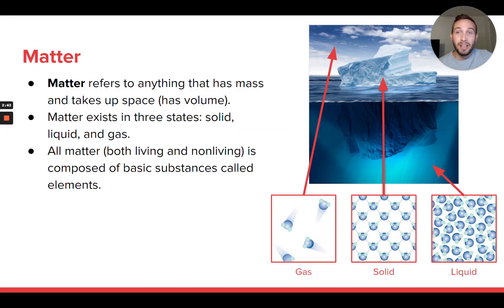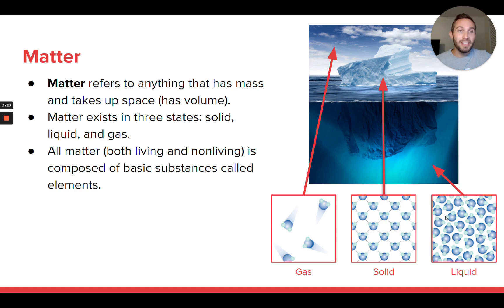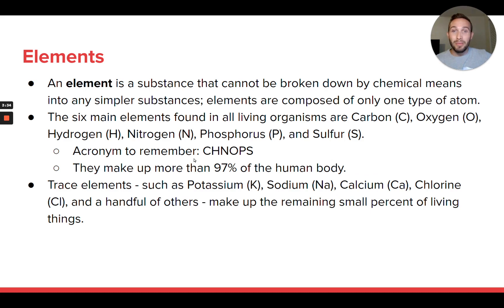When we talk about chemistry, we need to know about matter — anything that has mass and takes up space. It can exist in three different states: solids, liquids, and gases (and plasma as a fourth). All of these states of matter are applicable for living organisms. There are gases in biology since you're breathing in oxygen, living things are solid objects, and there's a lot of liquid inside of us — living things including humans are made of mostly water.